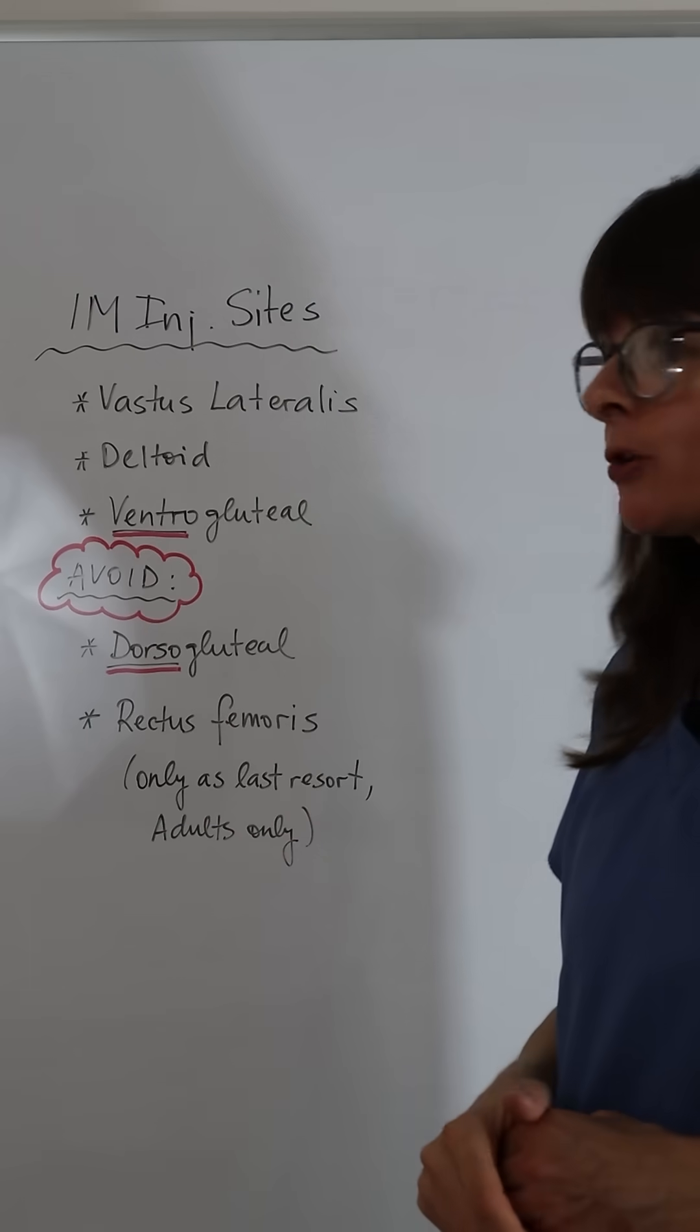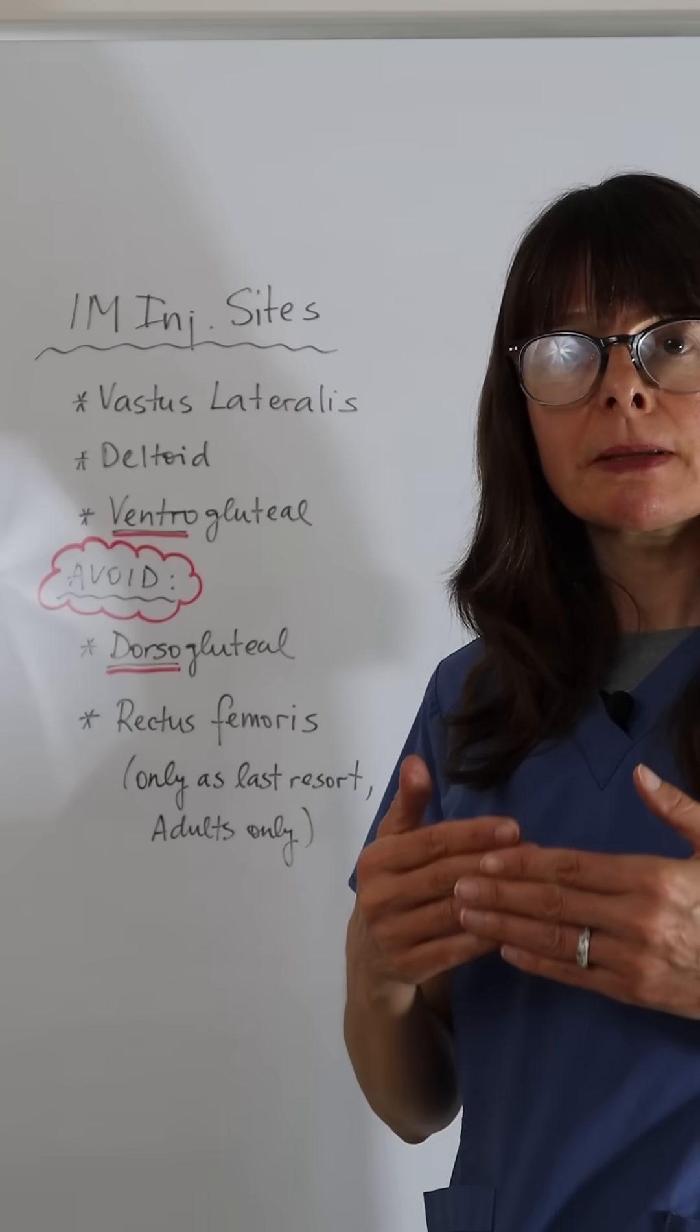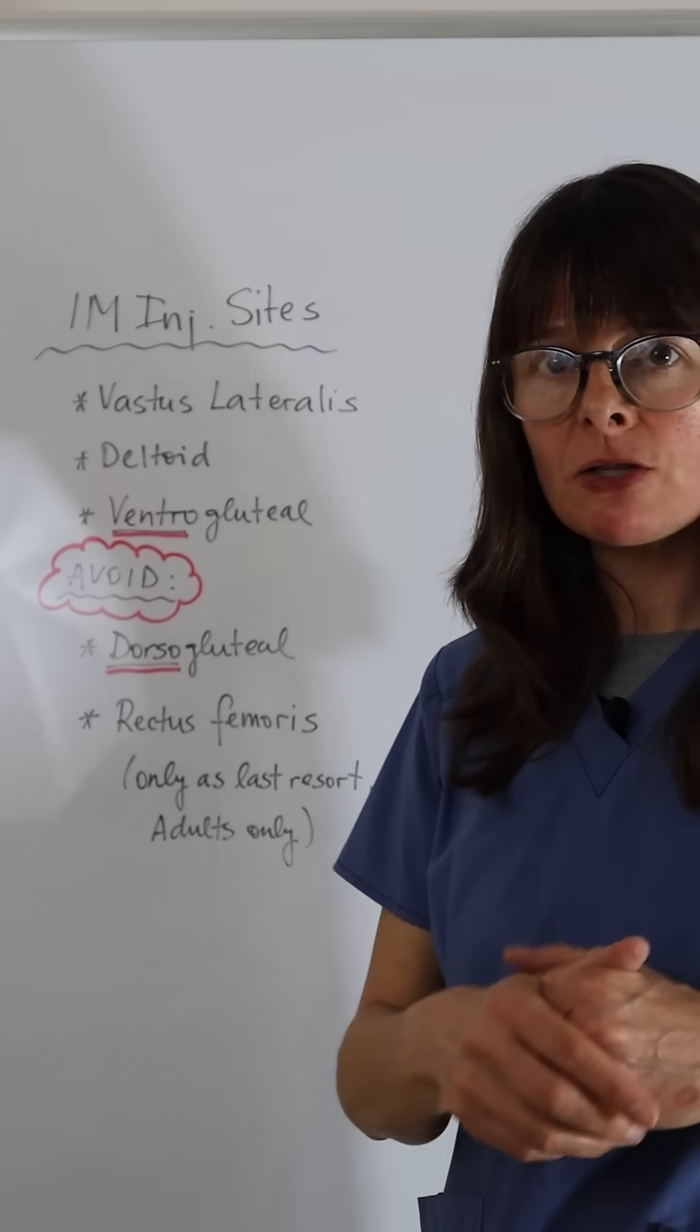For adults, we can also use the ventrogluteal site, which means that we are injecting the gluteus medius muscle from the front of the muscle.